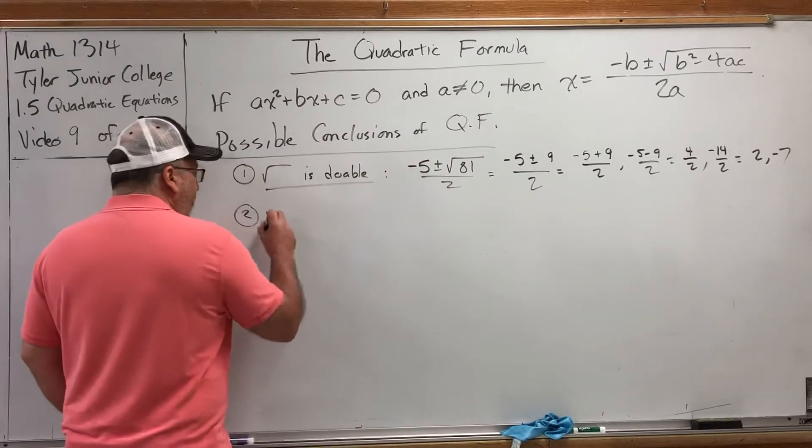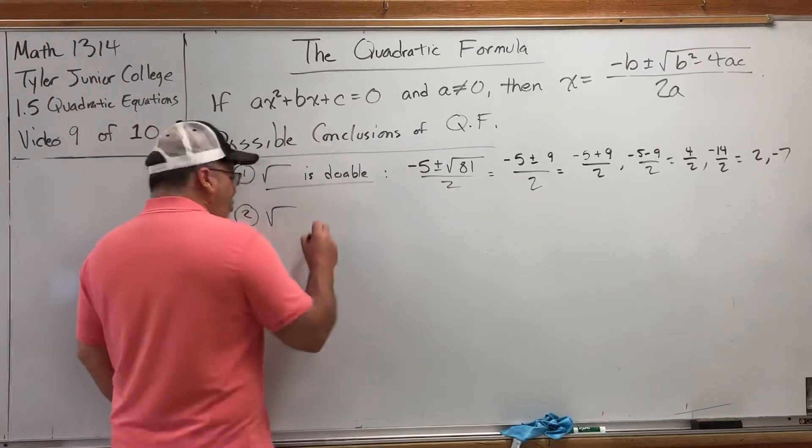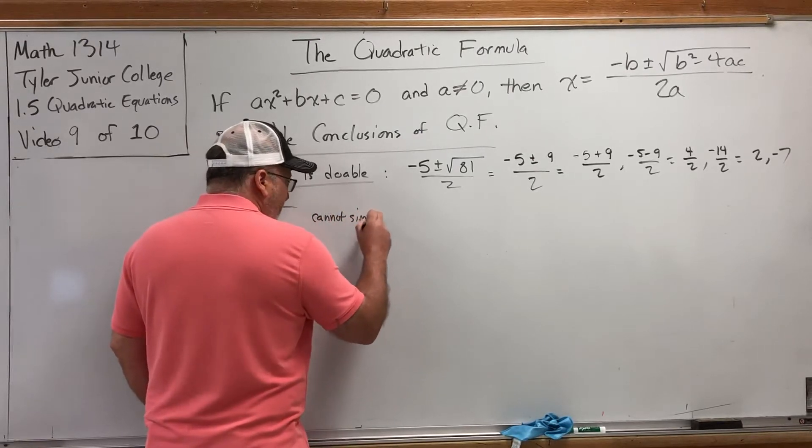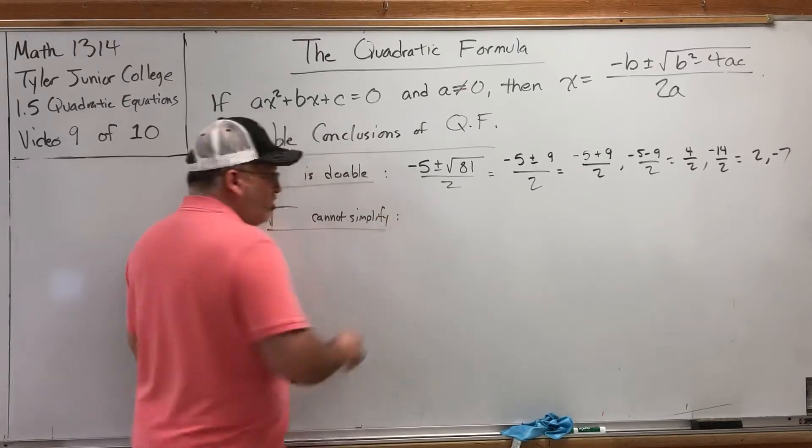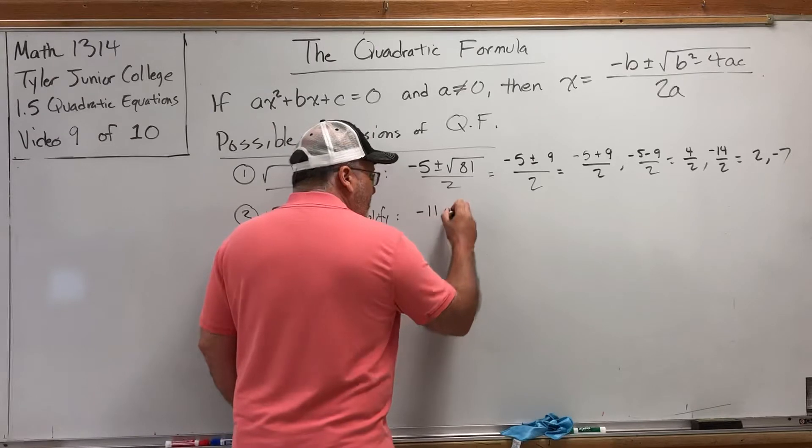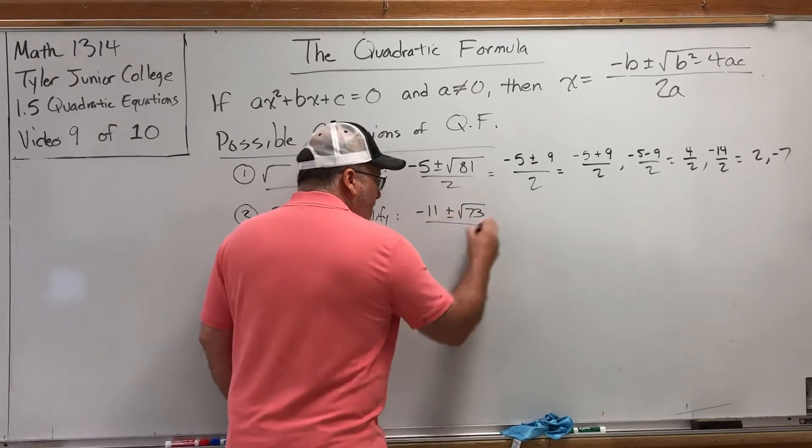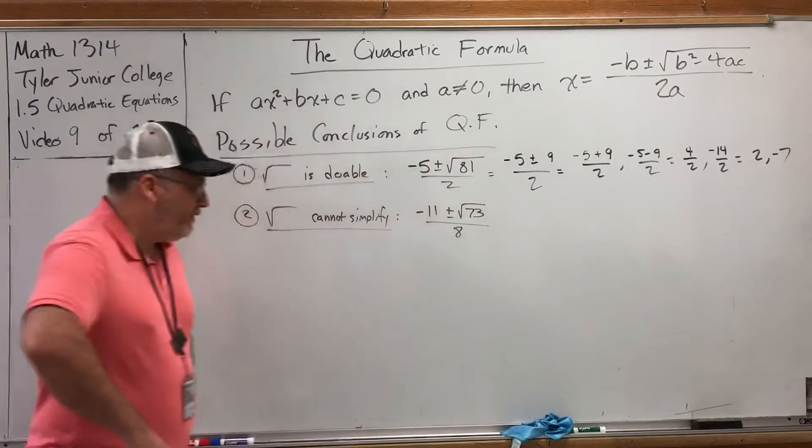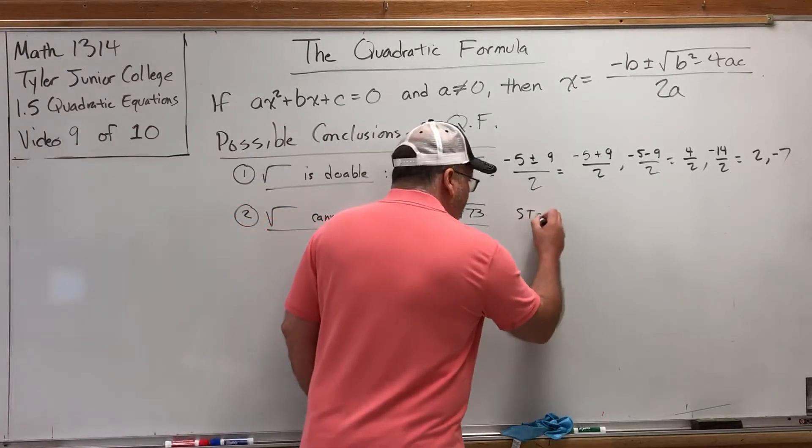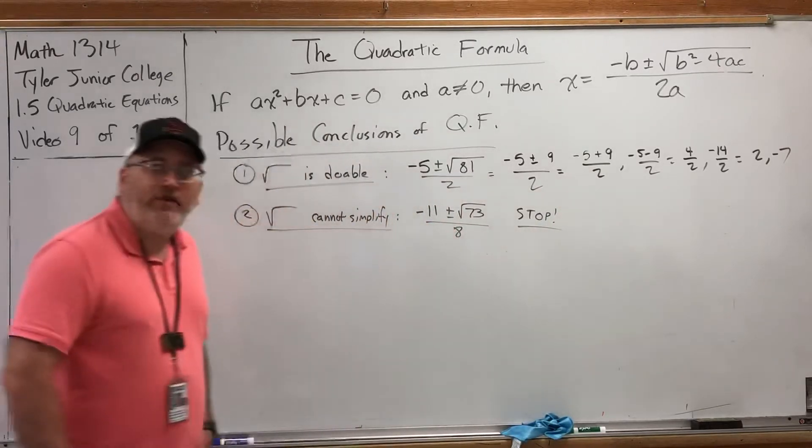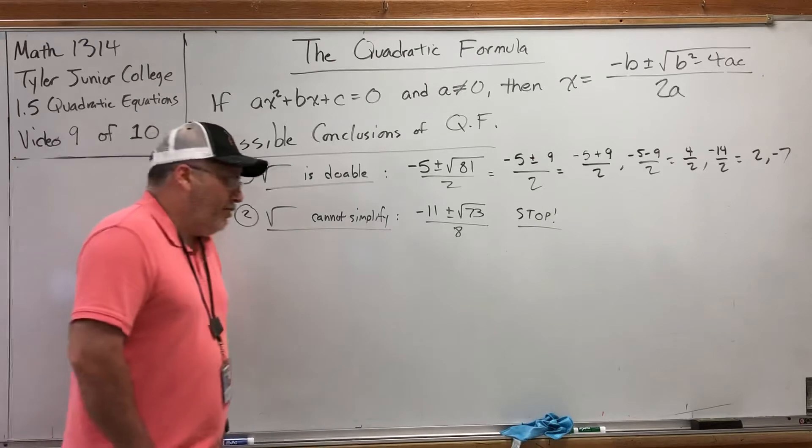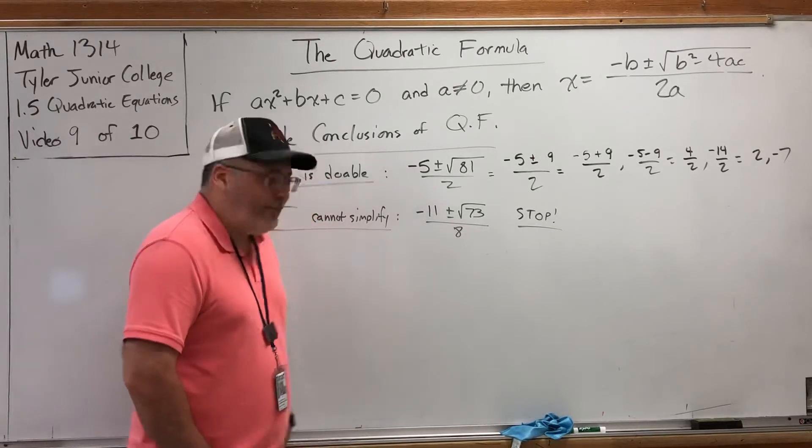The second possible outcome is the square root cannot simplify. That's what we just saw in the previous problem when we had negative 11 plus or minus the square root of 73 over 8. If you can't do a thing with the square root, you stop. It's over. There's nothing left to do. So again, a little irony here, the worse the square root, the better, because we get to stop sooner.